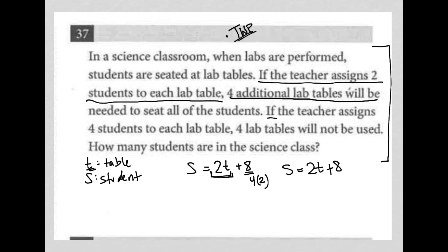Next sentence. If the teacher assigns four students to each lab table, four lab tables will not be used. So that's like a T minus four. Right. So T, whatever our original T value was, if we subtract four, the number of students is equal to four times that value. Hopefully that makes sense based upon what we read.